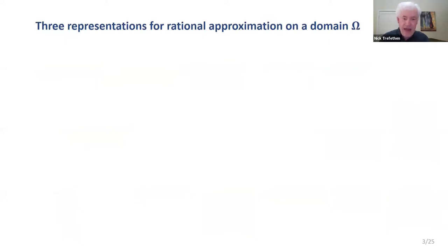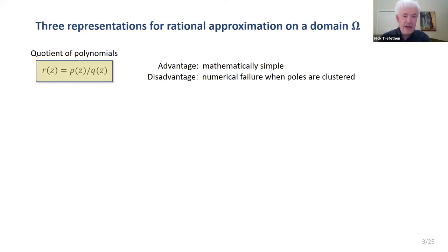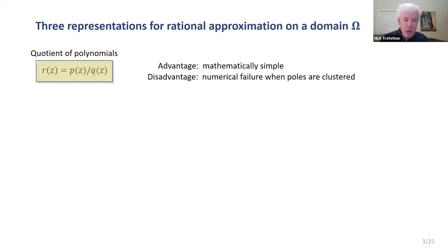This slide shows the outline of the talk. To understand it, we need to talk about the three most important representations for rational functions in computation. First is the obvious one: a rational function as a ratio of two polynomials, P over Q. That's the simplest mathematically, but numerically it's not much good. Rational functions are most powerful when the poles are clustered, and in precisely that context this representation becomes numerically exponentially unstable.